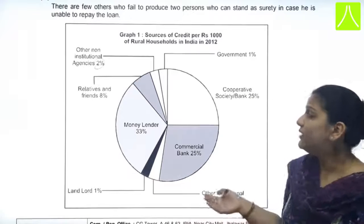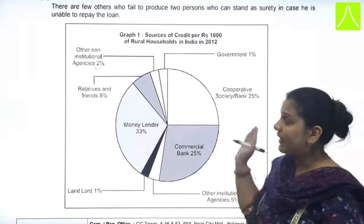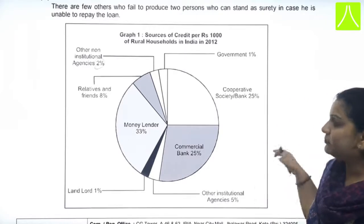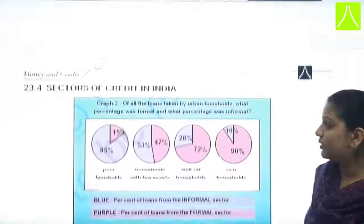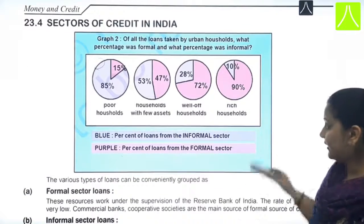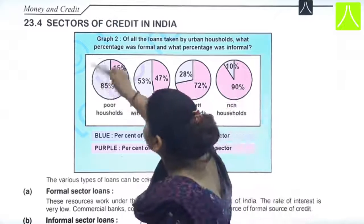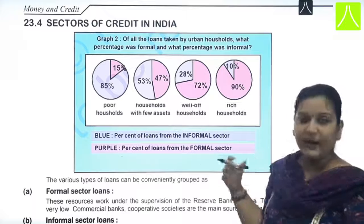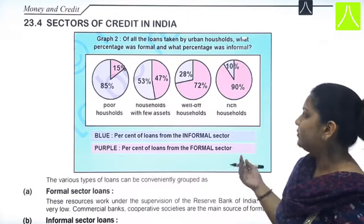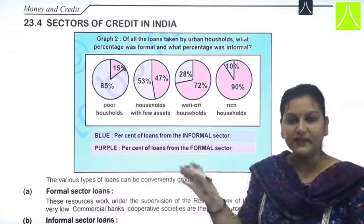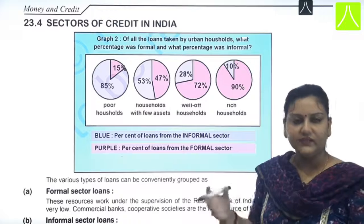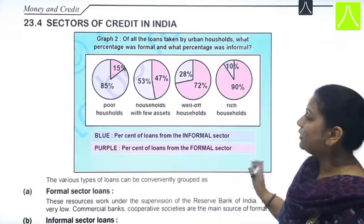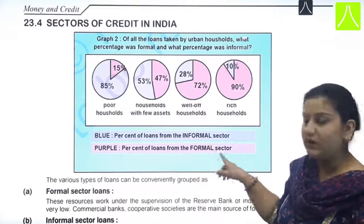Both situations exist, but the reliance on non-formal sources is still higher. Moving ahead, we have sectors of credit in India — there are two sectors from which we can avail loans: formal and informal. Formal includes banks, commercial banks, and cooperative societies. Informal includes friends, relatives, money lenders, and others. This graph has two colors — blue represents the percent of loan from the informal sector and purple represents the percent from the formal sector.